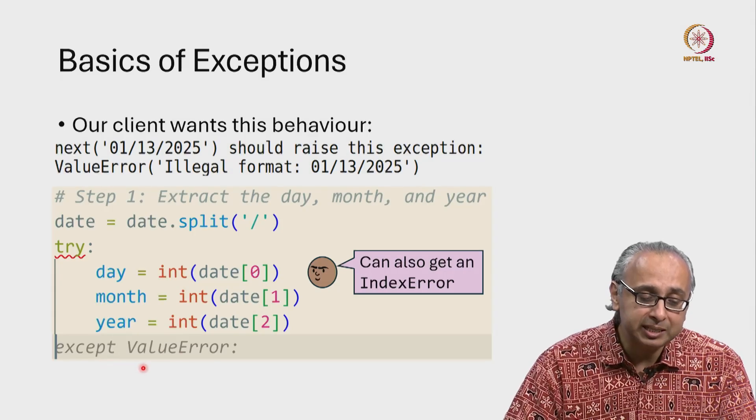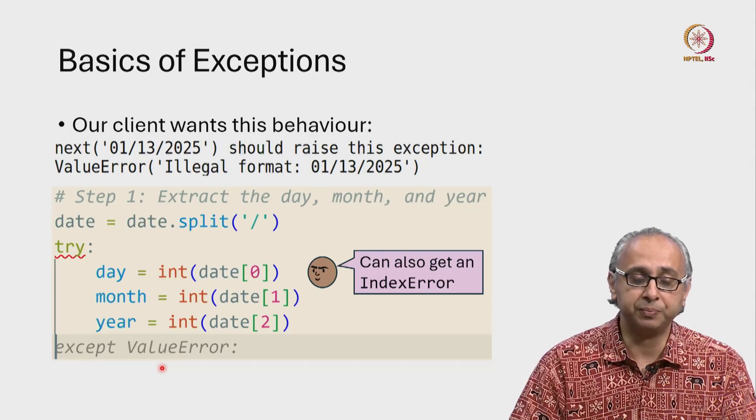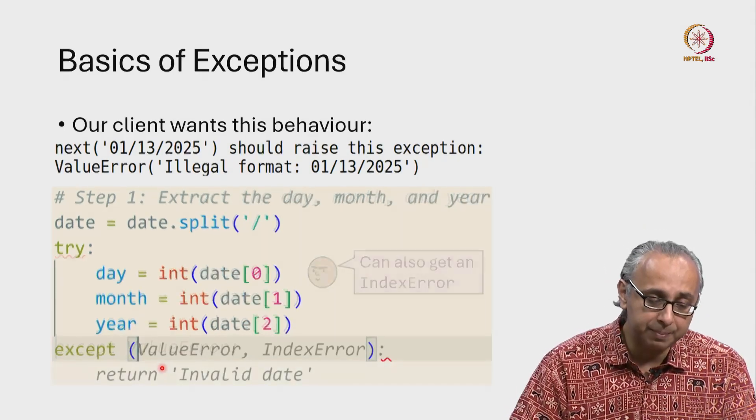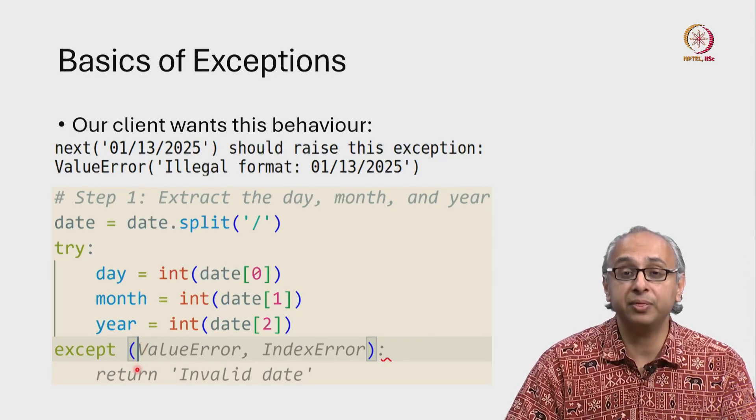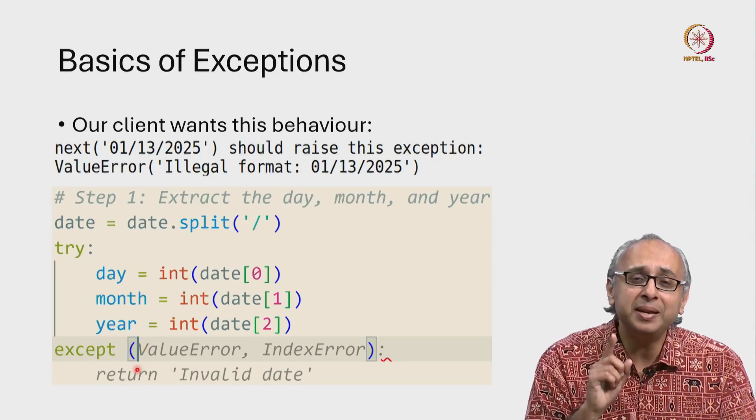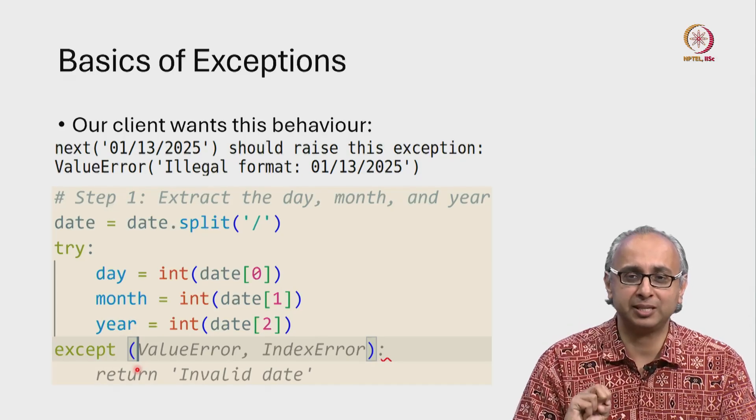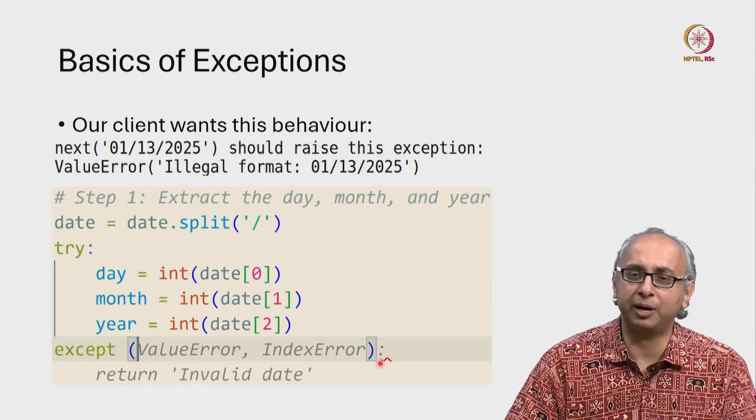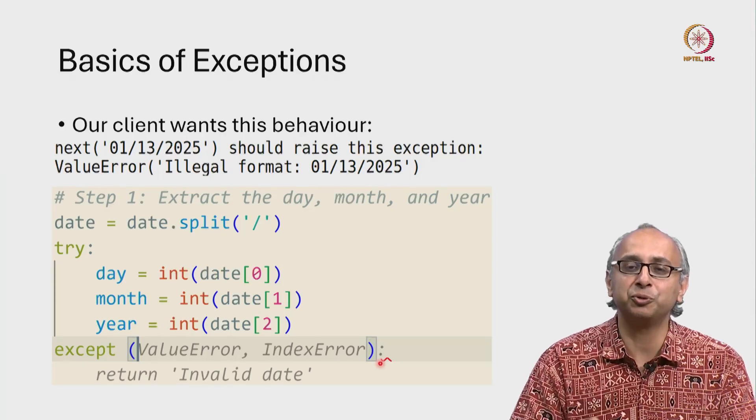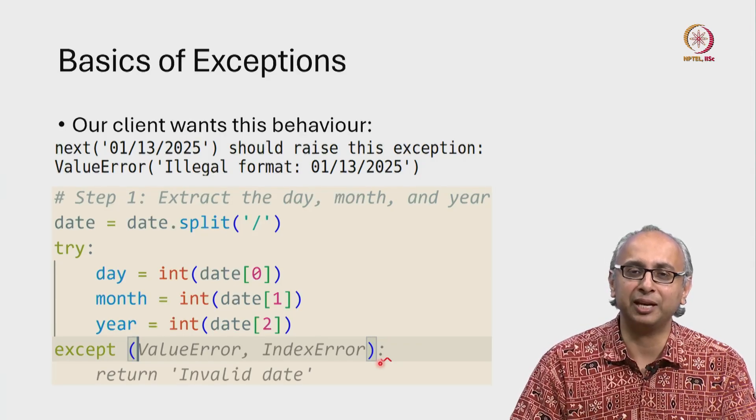So what we will do is we will slightly modify this suggestion. We will say except and then we will open a round bracket, a parenthesis. And the minute we do that, two things happen. Firstly my IDE closes that bracket for me. This doesn't use complicated tools like generative AI.